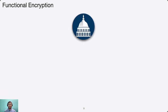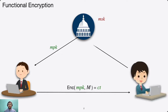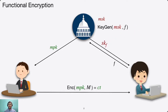In a Functional Encryption scheme, there is a setup authority who generates a master secret key and a master public key. Using the master public key, an encryptor encrypts a message and generates a ciphertext. The decryptor who wants to decrypt the ciphertext requests a functional secret key skf corresponding to function f from the central authority, who generates skf and gives it to the decryptor. Having skf, the decryptor can decrypt the ciphertext and learns the function of the message.